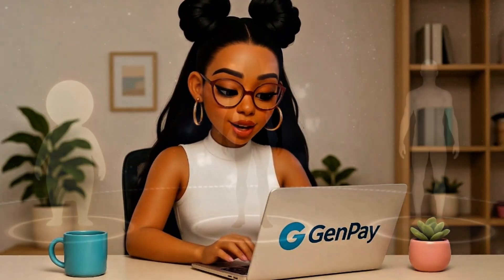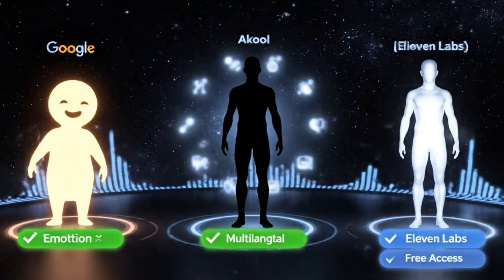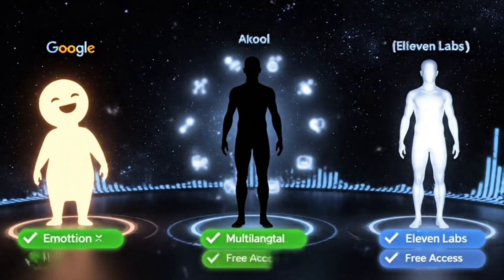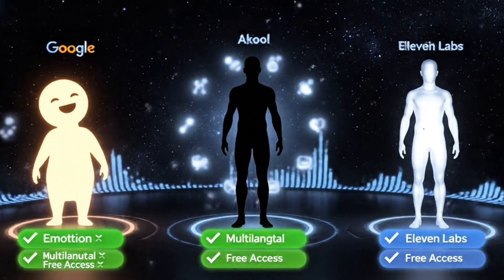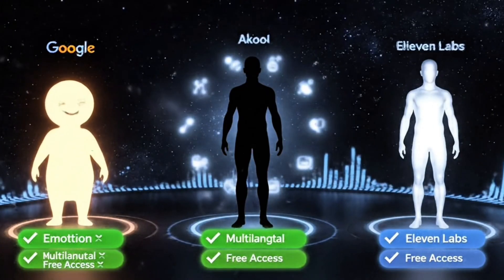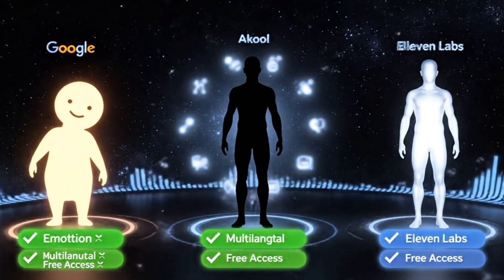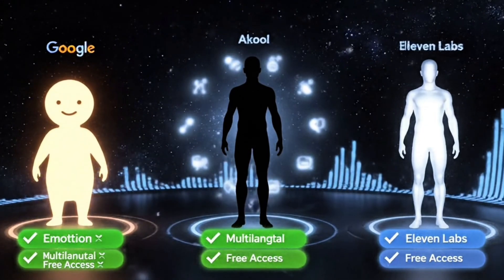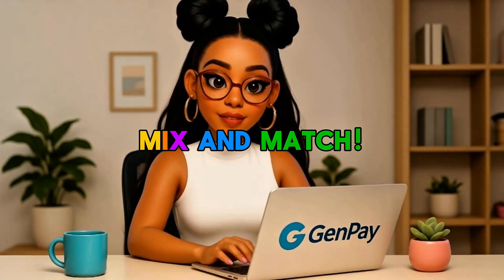Let's wrap this up. Akool is fast, free, and great for multilingual clarity — a good choice if you don't need emotional delivery. Google AI Studio is the best for expression, emotion, tone, and realism, especially if you're telling stories or doing dialogue. Eleven Labs sounds super clean, but unless you pay or get advanced with prompts, it won't handle emotions well. Try all three and mix and match depending on your project. If this helped, go ahead and like, subscribe, and let me know in the comments which one you're trying first. This is GenPay AI, and I'll catch you in the next one.